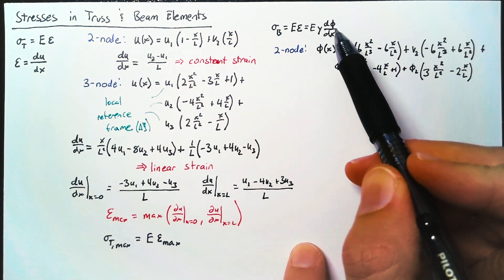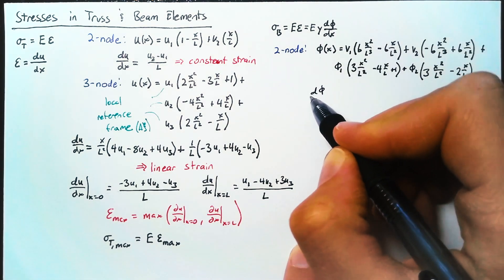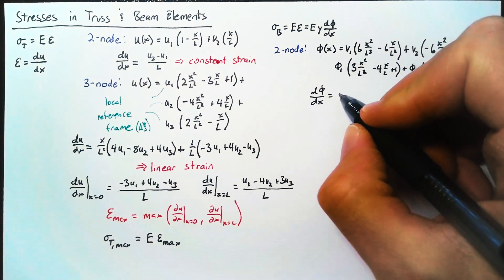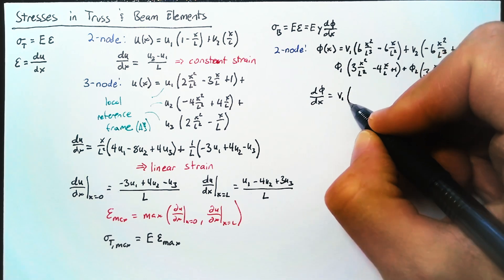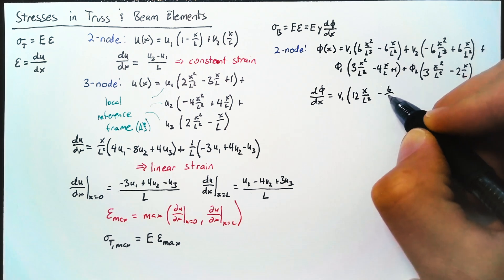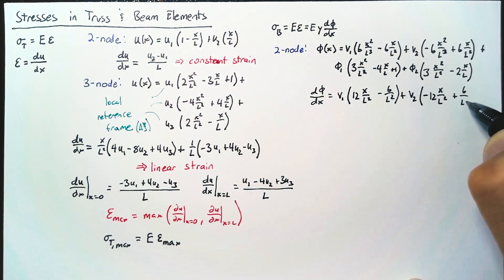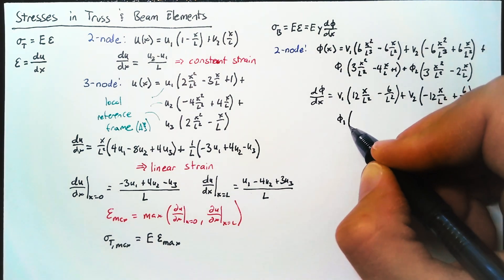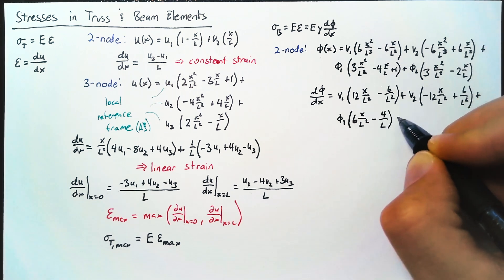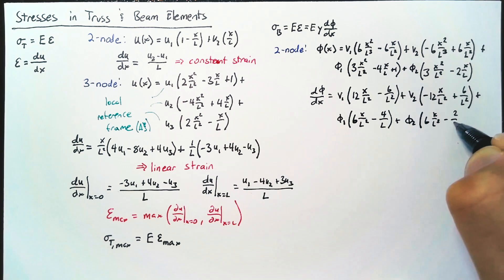But of course, what we care about is this d phi dx. And so we're going to take an x derivative of that rotational displacement. And we'll just leave it in a very similar form this time. We have V1 times 12x over L squared minus 6 over L squared. The V2 term looks very similar. And then our phi1 term becomes 6x over L squared minus 4 over L. And the phi2 term is 6x over L squared minus 2 over L.